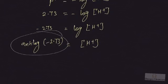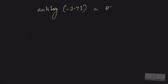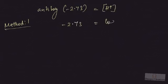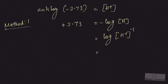There are actually two methods to do this. In Method 1, instead of going to the antilog of minus 2.73 stage, we stay at the previous stage: minus 2.73 equals log of H⁺ ion concentration. This can be written as log of H⁺ ion concentration to the power minus 1, which is the same as log of 1 divided by H⁺ ion concentration, and that equals 2.73.